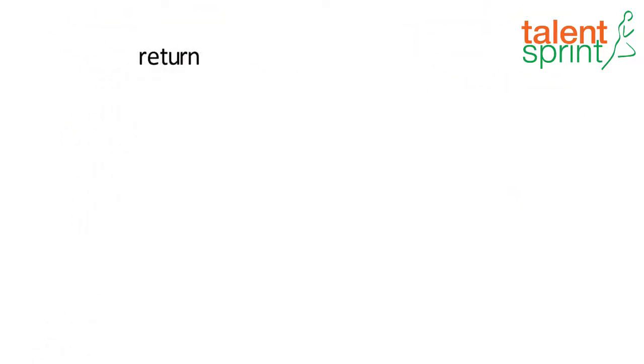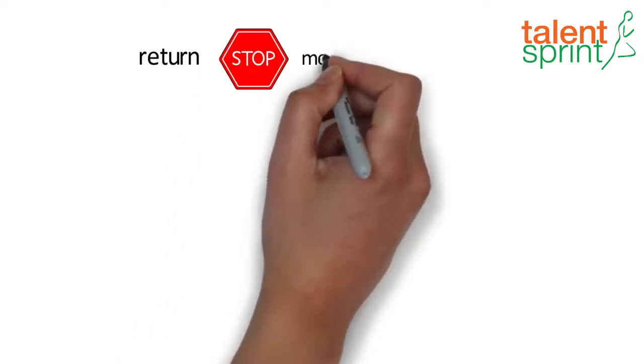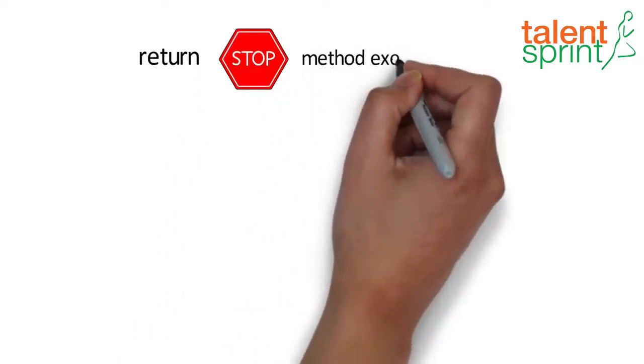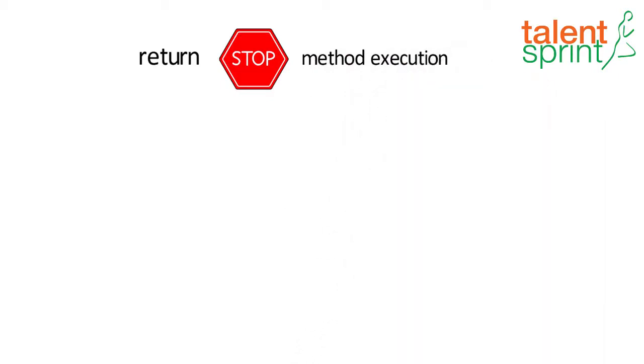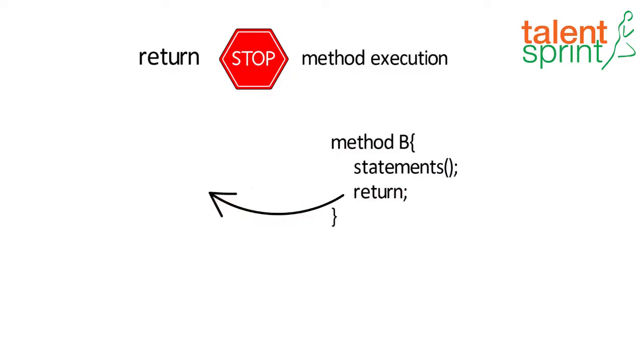Now let's talk about return keyword. Return statement immediately stops executing the method and returns from the method execution. It exits from the current method and control flow returns to where the method was invoked from.